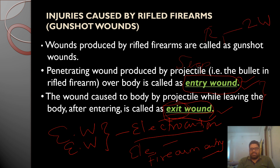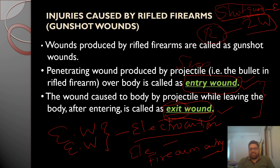In rifled firearms, due to high velocity from rifling, both entry and exit wounds are typically seen. In shotgun injuries, only an entry wound is usually present because the shotgun lacks rifling, resulting in minimal velocity — making an exit wound less likely. The presence of entry and exit wounds also depends on the part of the body struck and the distance between victim and assailant.